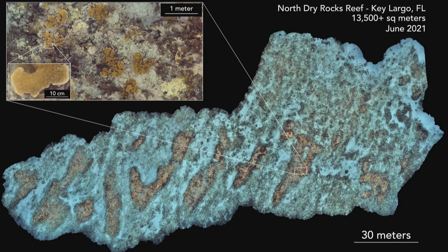This is now what we're capable of doing. This is a photo mosaic — an ortho mosaic, whatever you want to call it — a large-scale image of North Dry Rocks Reef off of Key Largo, Florida. In this single image, we encompass a little over 13,000 square meters of seafloor. You can see there's some nice spur and groove, some back reef habitat. And when you zoom in, you still maintain the resolution needed to do population-level analyses.